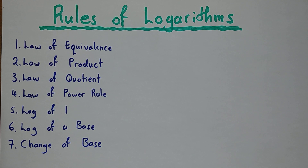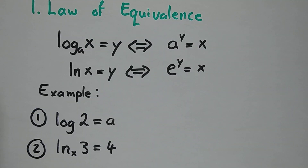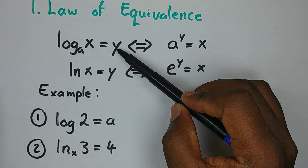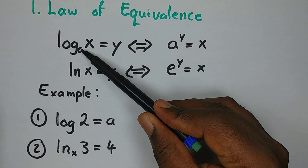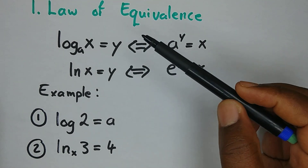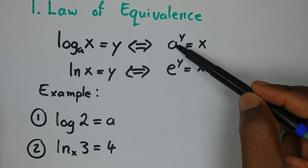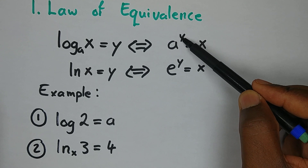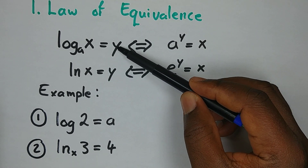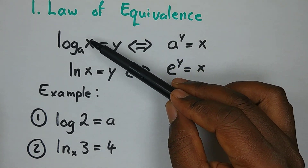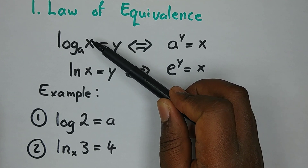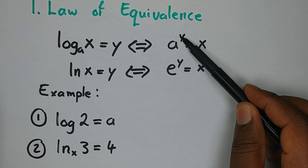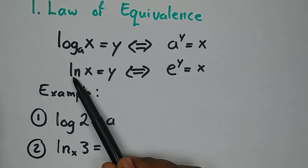Let's start with Rule 1, known as the Law of Equivalence. According to this law, if you have log x in base a equal to y, this can change to: a to the power y equals x. The base a raised to the exponent y gives the argument x. So to convert from logarithmic form to exponential form, we say: base to the power exponent equals argument.